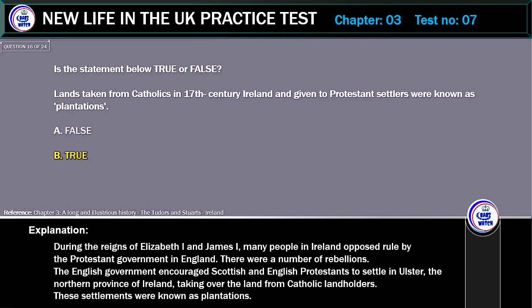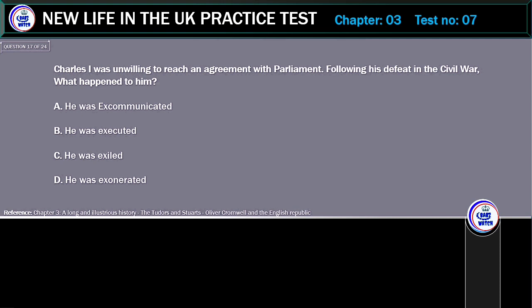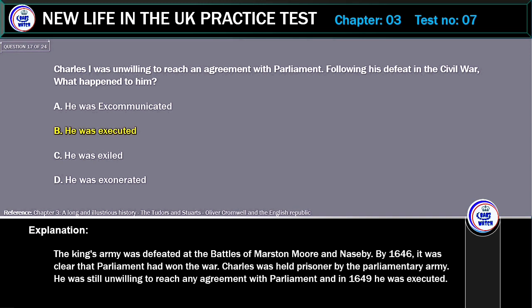These settlements were known as plantations. Charles I was unwilling to reach an agreement with Parliament. Following his defeat in the Civil War, what happened to him? A. He was excommunicated. B. He was executed. C. He was exiled. D. He was exonerated. Correct answer: He was executed.